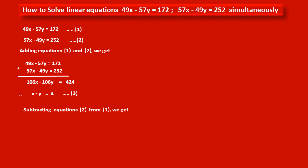Now we have to subtract equation 2 from equation 1. Writing equation 1: 49x - 57y = 172, minus equation 2: 57x - 49y = 252. We change the sign of each term of the second equation. Subtracting terms of the same variables: 49x - 57x = -8x, and -57y + 49y = -8y. On the right-hand side, 172 - 252 = -80.